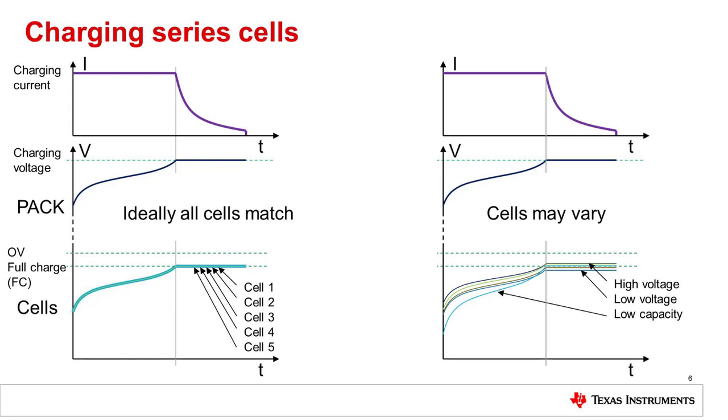Since the BQ77915 is a protector, it is not able to track the state of charge of the individual cells like an impedance track gauge. Therefore, it uses voltage-based balancing.